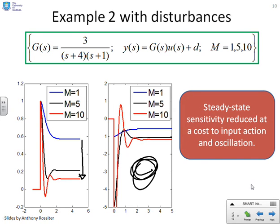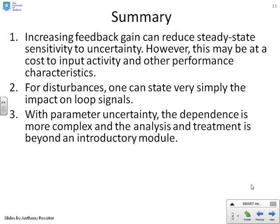So steady state sensitivity can be reduced, but it will often be a cost to input action and oscillation and even perhaps stability. So in summary, increasing feedback gain can reduce sensitivity to uncertainty, certainly in the steady state. But this can be at the cost of input activity and other performance characteristics. And you'll notice here, we've just done a few examples. We haven't been systematic. For disturbances, you can state very simply the impact on the loops. You get very simple transferences. With parameter uncertainty, it's not quite so clean because the effect of the uncertainty appears in the numerator and the denominator. And the treatment and analysis of that is beyond an introductory module.